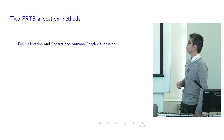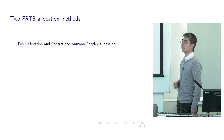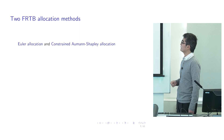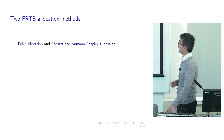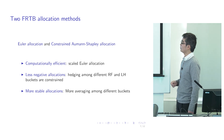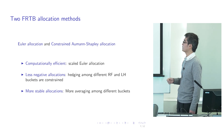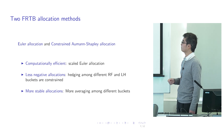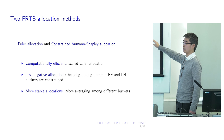We introduce two capital allocation methods specifically designed for the FRTB. The first is the Euler allocation applied to the FRTB. The second is a type of constrained Aumann-Shapley allocation. Both of these two allocation methods have three properties. First, both of them are computationally efficient — we show that both are actually scaled versions of the current Euler allocation method, with the scaling factor depending on the risk factor and the liquidity horizon. Therefore, they are very easy to implement.